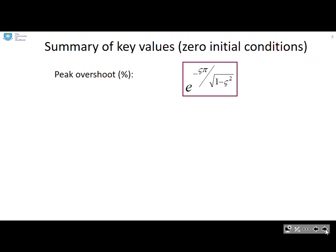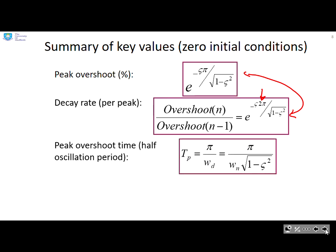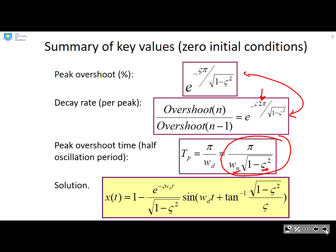Let's summarise the key values. The peak overshoot is given by this formula here: e^(-ζπ/√(1-ζ²)). The decay rate per peak is pretty much the same formula except there's a 2 in there. Peak overshoot time - in essence this is actually half the oscillation period - is given as t = π/(ωₙ√(1-ζ²)) = π/ωd, which depends upon ωₙ the natural frequency and ζ the damping ratio.